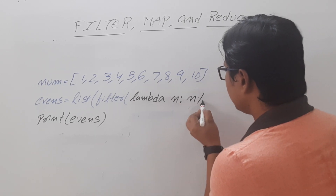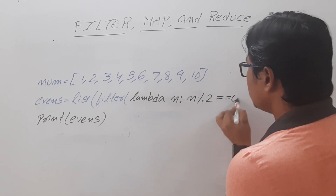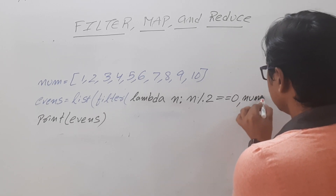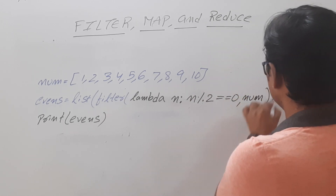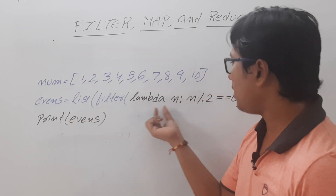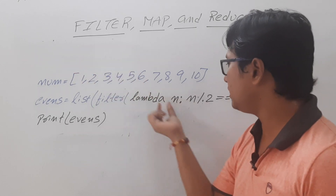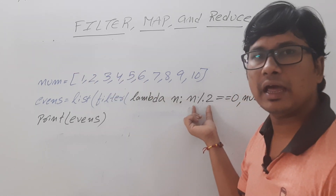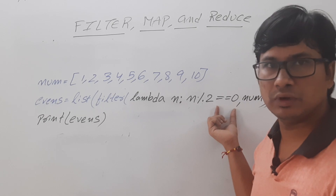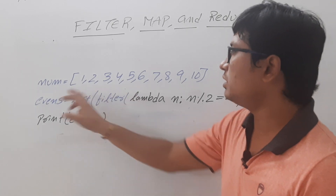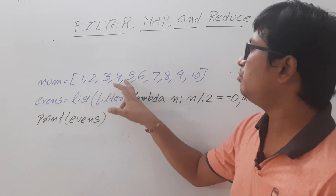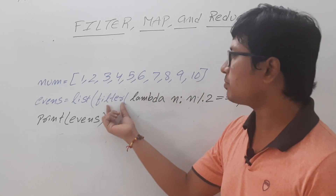I will use: lambda n: n % 2 == 0, with num as the list. Using this lambda in place of the iseven user-defined function does the same thing — it takes parameter n, performs the operation, and returns the expression n % 2 == 0. If it is even, it is stored in the events list. Finally you will again get the output as 2, 4, 6, 8, 10. So this is the purpose of the filter.